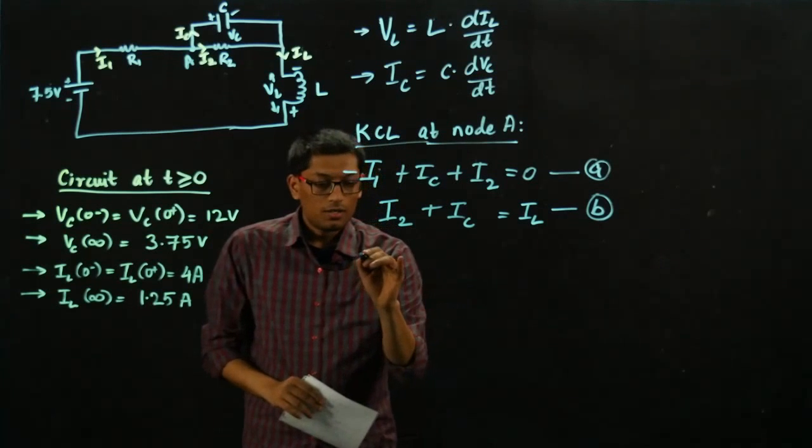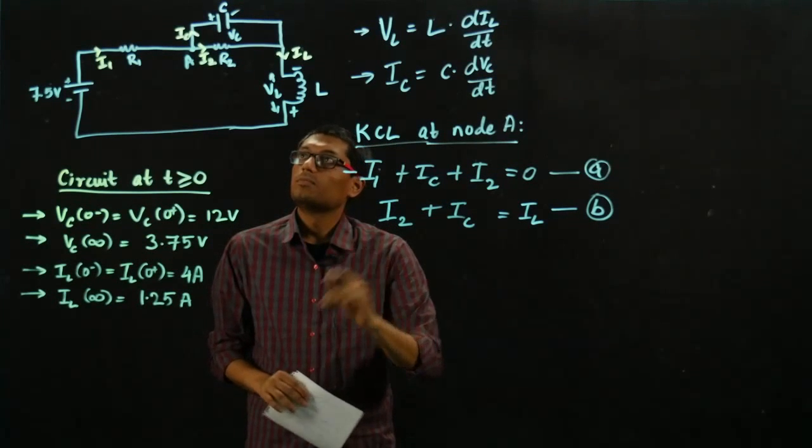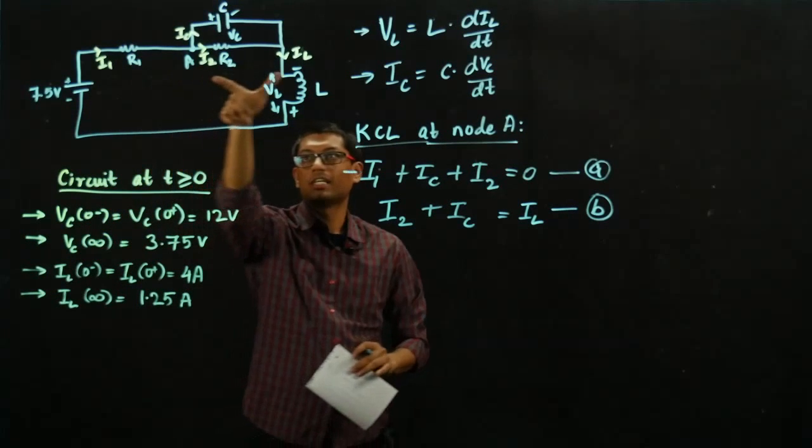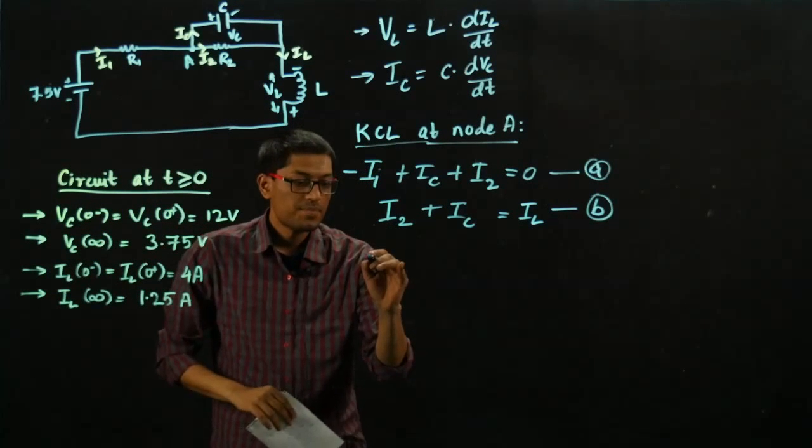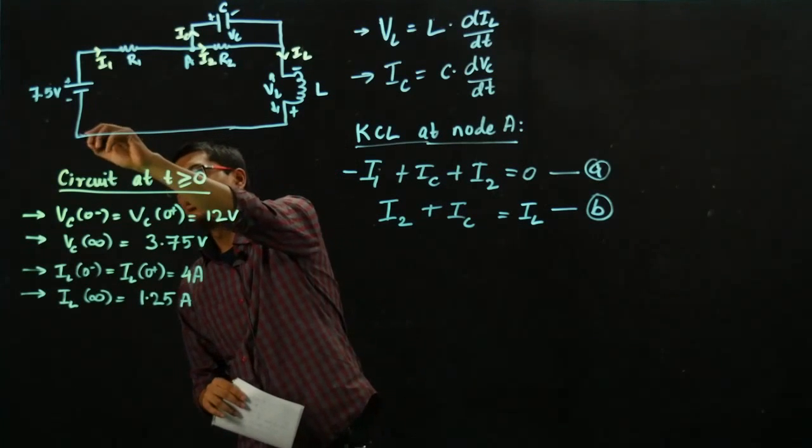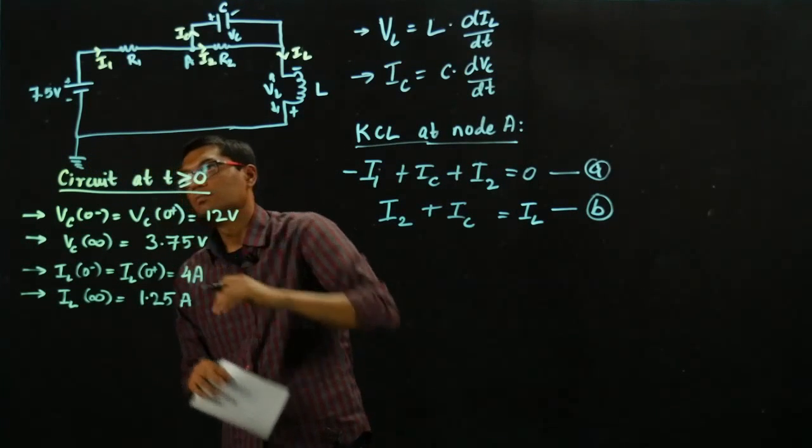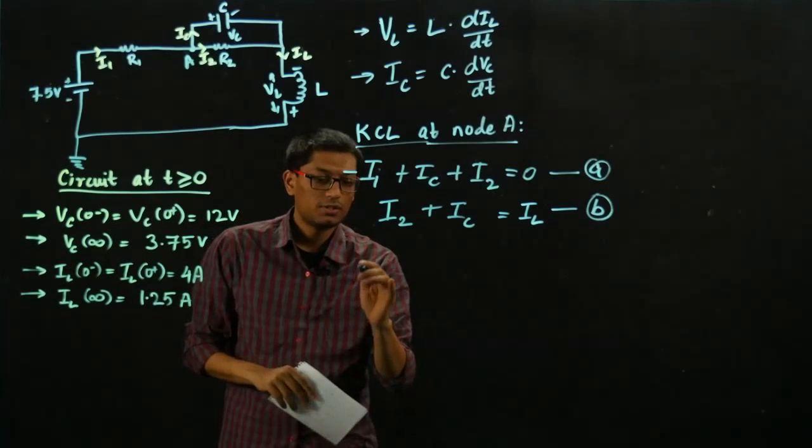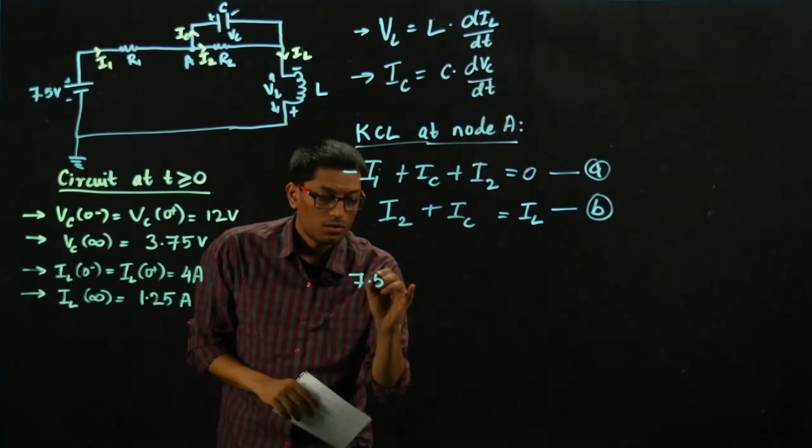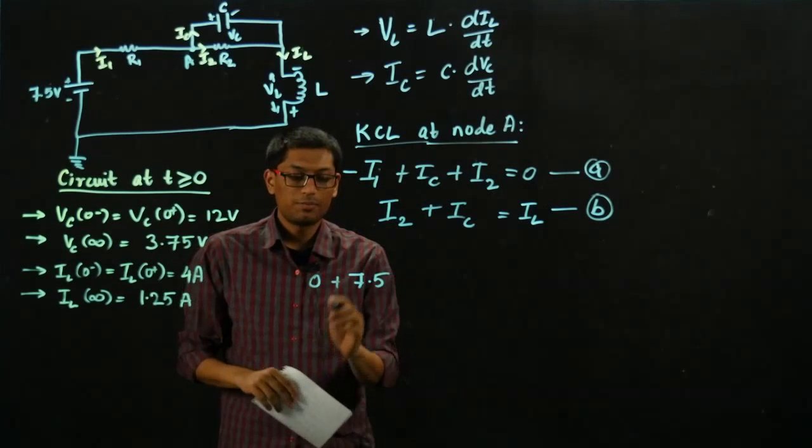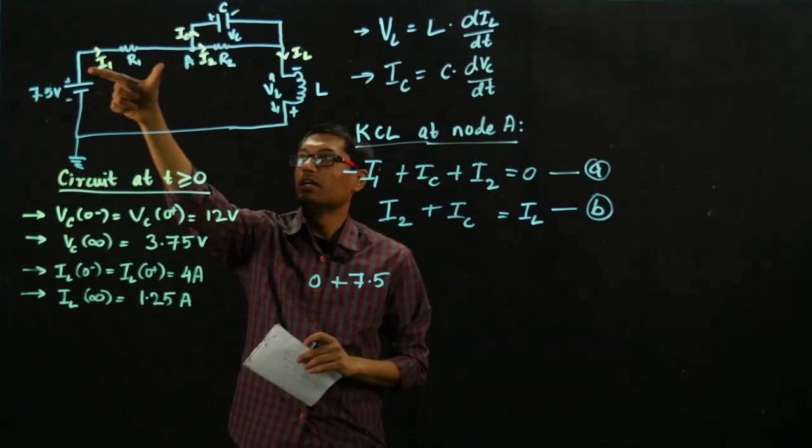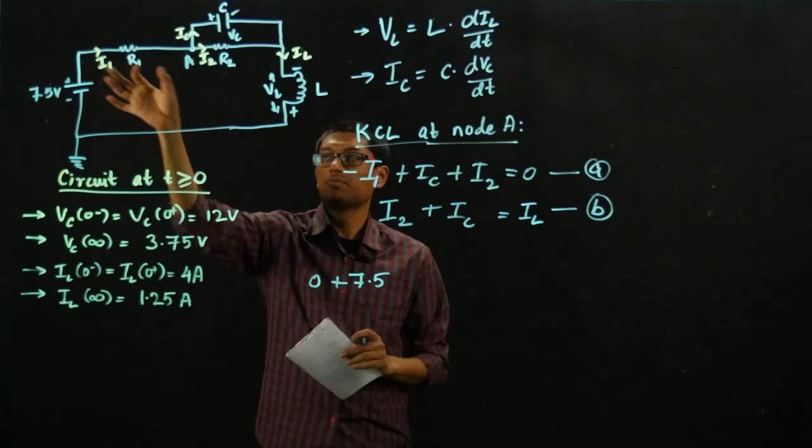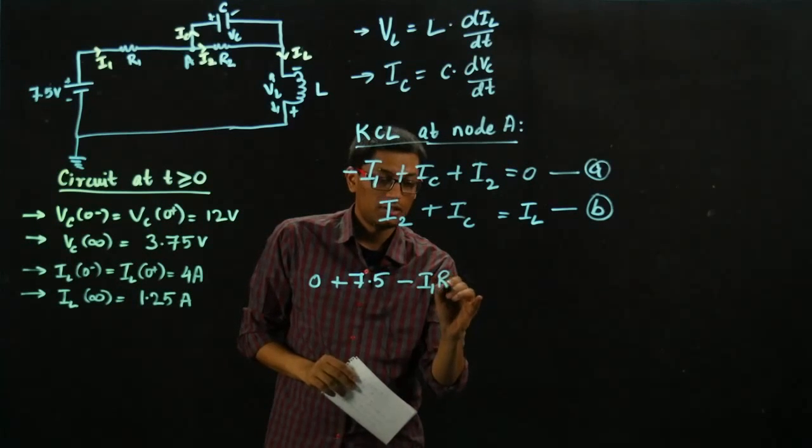Now, we'll go along this loop and connect all the voltages across each component. If I ground this node and if I go across the battery, I get a voltage increase of 7.5 volts. So zero plus 7.5 as I go across the battery. Now if I go across the resistor, there will be a voltage drop of I1 times R1. So minus I1R1.